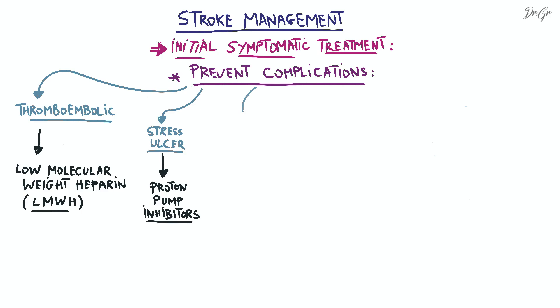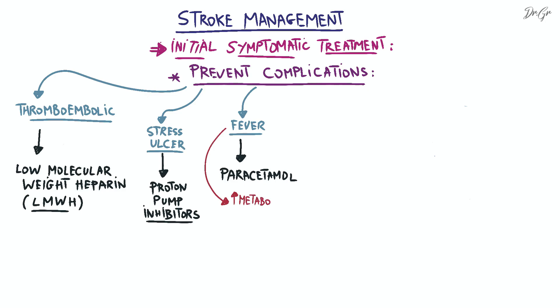To prevent cardiac arrest, the following measures should be taken to maintain the patient's stability. First, administer paracetamol if the patient has fever, because fever can increase metabolic demands and worsen the outcome of the stroke patient.